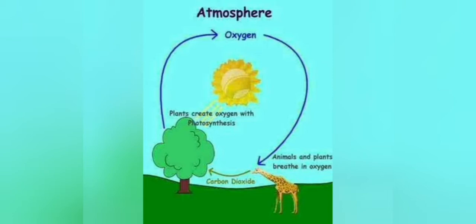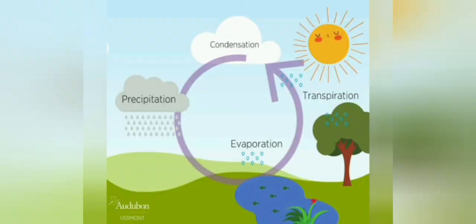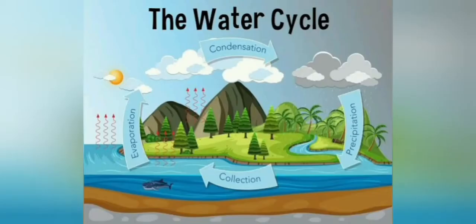Trees are not only green lungs, but trees also take in water from their roots and release water vapor into the air through evaporation or transpiration. The water released through transpiration evaporates and helps in cloud formation. If there were fewer trees, the transpiration process would decrease, evaporation would reduce, and cloud formation would be greatly affected.